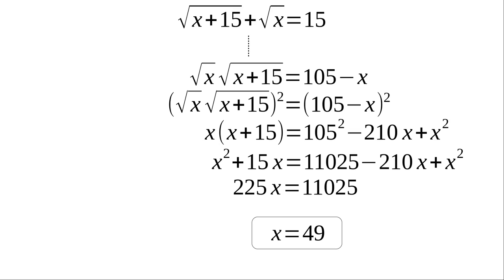Now, that means x is 49. And if you plug it into the equation, you'll get x plus 15 for the first square root sign, which is 64, which is a perfect square. And you take the square root of that, you get 8. And then obviously the square root of 49, also a perfect square, is 7. So if you add 8 and 7, you get 15.